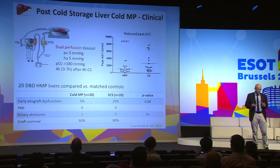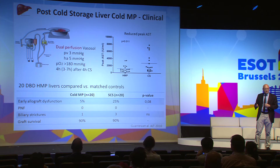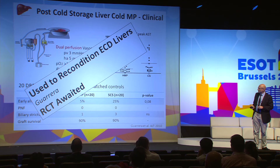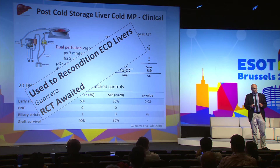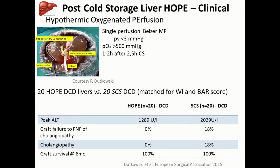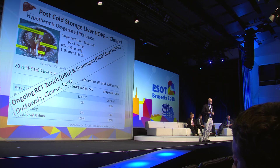For liver cold machine perfusion, oxygen was introduced into the clinic by Guarrera as a post-cold-storage strategy. This analysis showed a reduction in peak transaminase and an improvement in early allograft dysfunction rate, though this was retrospective. He uses this technique to recondition high-risk livers. The OPE technique adds even more oxygen in post-cold-storage machine perfusion and seems to be even better — in one trial comparing DCD treated by OPE versus control, there was a dramatic reduction in peak transaminase and much less biliary strictures. Trials are ongoing.